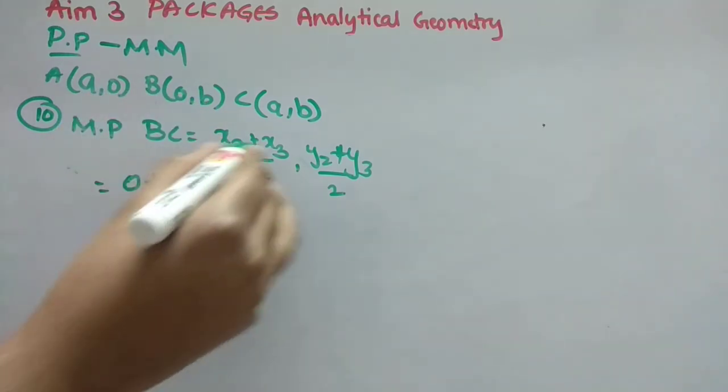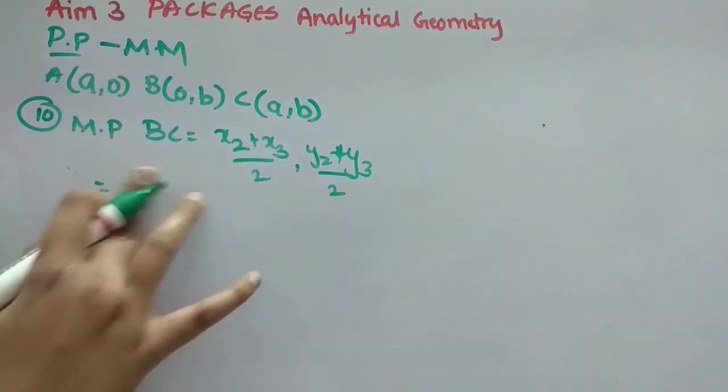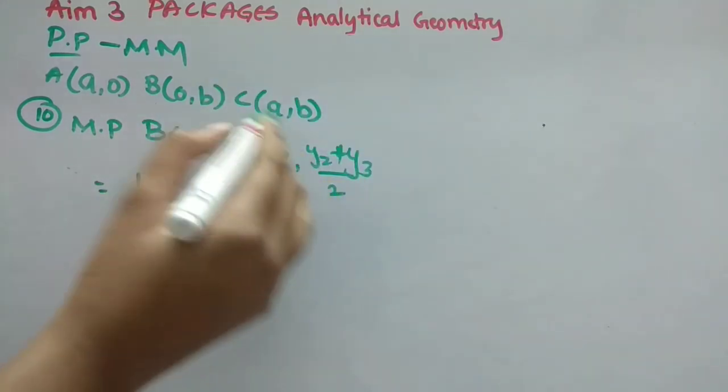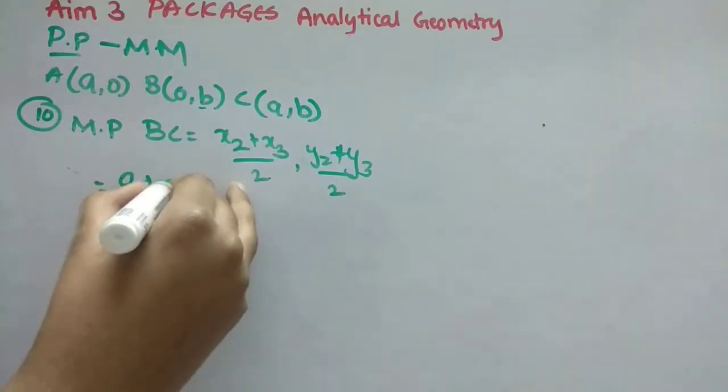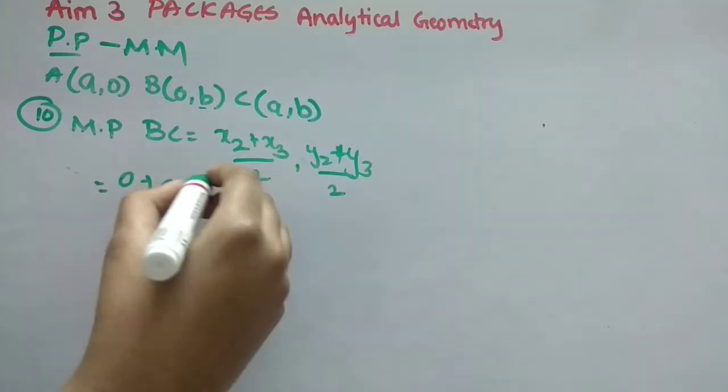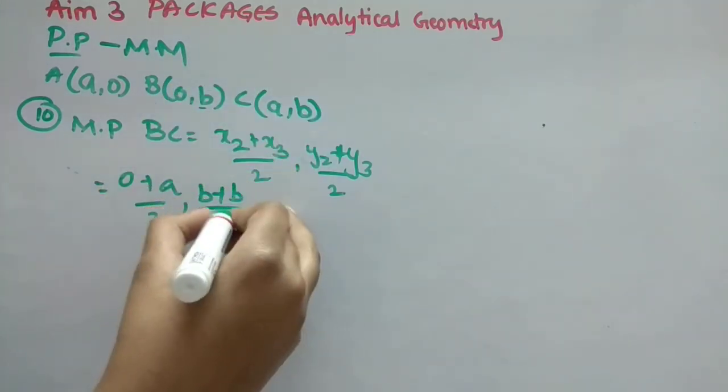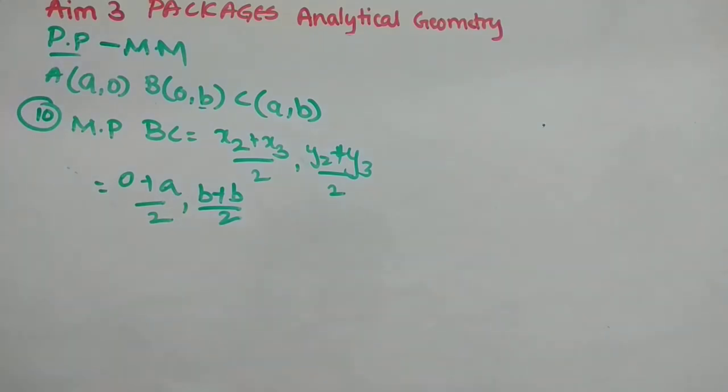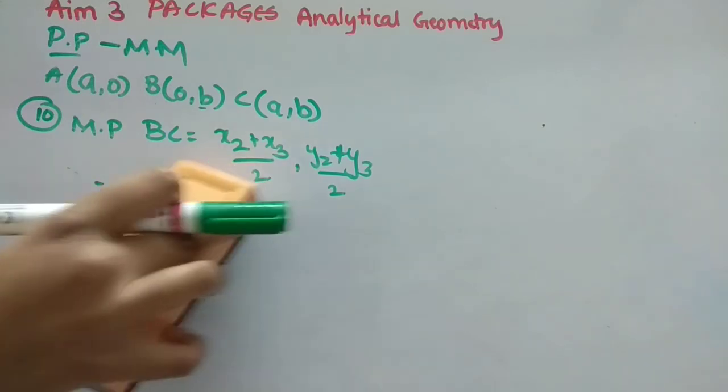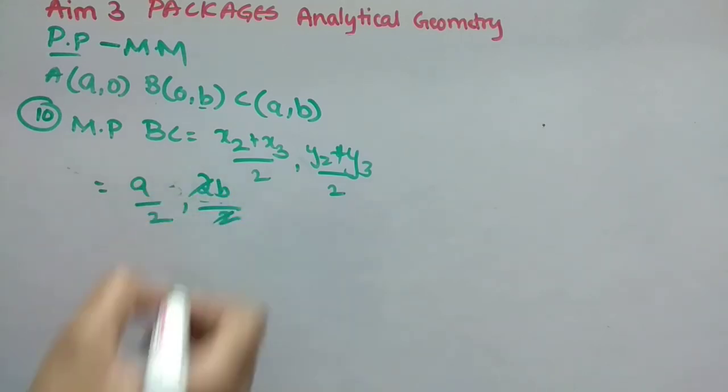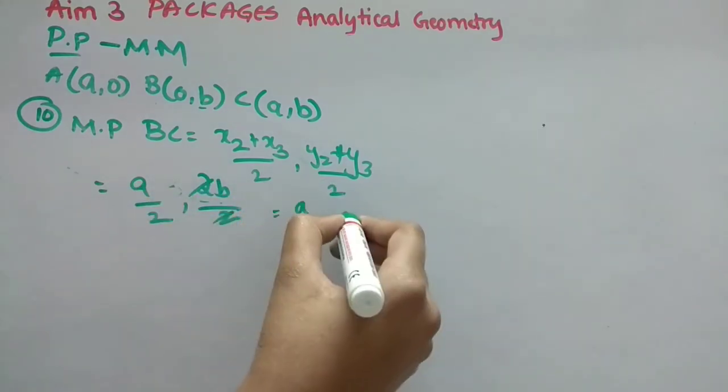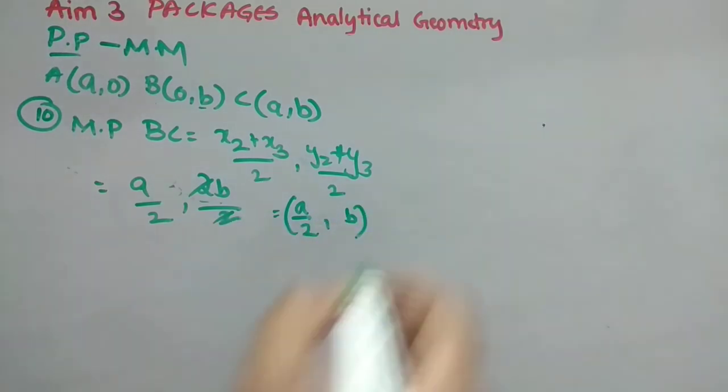So, X2 is 0 plus X3 is A by 2, comma. Y2 is B plus Y3 is also B by 2. Now, here what we can do is, 0 plus A, it is A itself. Right. Then, B plus B is 2B. So, A by 2, 2B by 2. So, 2 to cancel. So, it is A by 2, comma, B. Option is D.